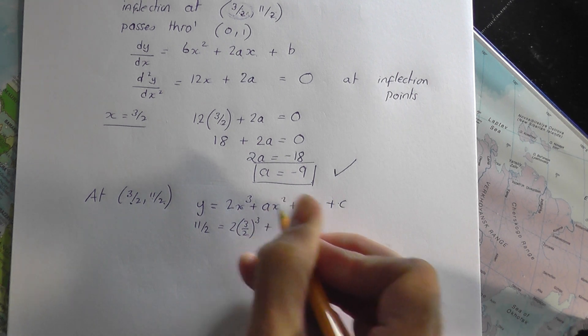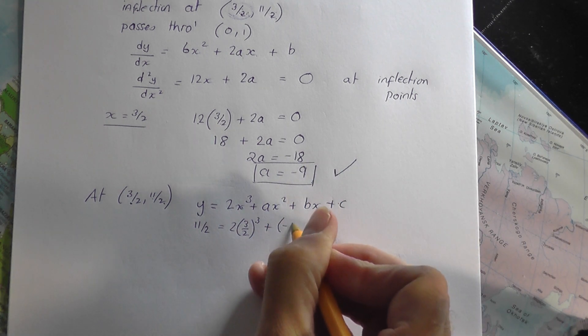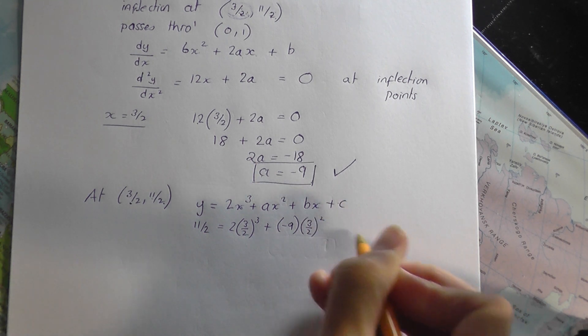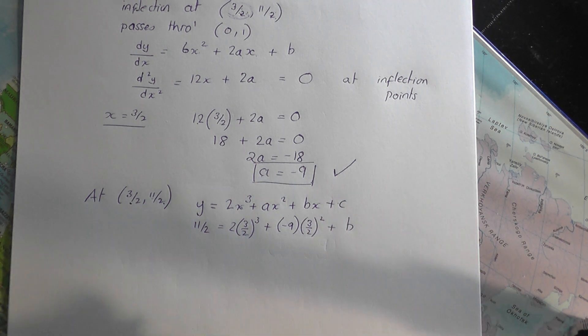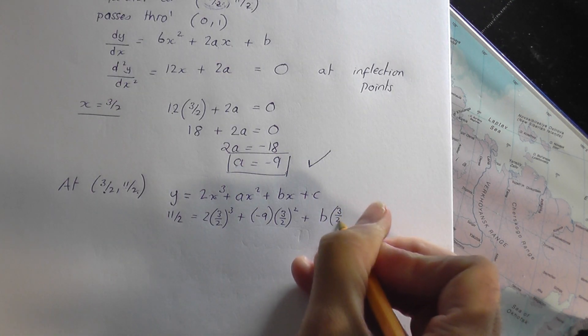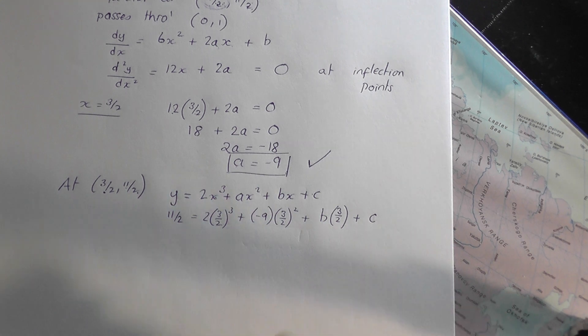Plus a. Well, a, don't forget we've found it, it's minus 9, x squared, 3 over 2 squared. Plus b, I don't know b yet, times x, 3 over 2. Plus c, I don't know c yet.